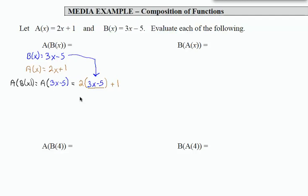Now what we're going to do at this point is just distribute and combine like terms. Let's see, I'm going to do that in brown. That's going to be 6x minus 10 plus 1, which is 6x minus 9. So my final result for a of b of x is 6x minus 9.